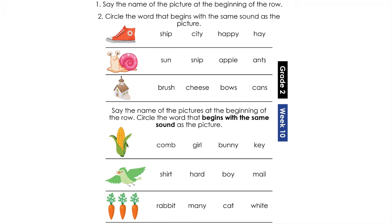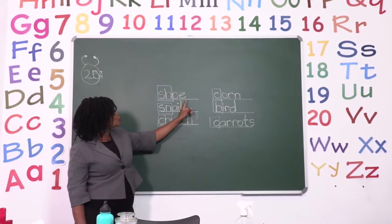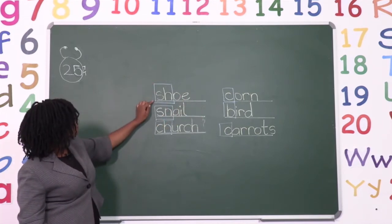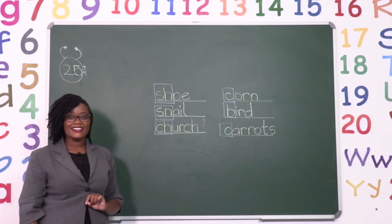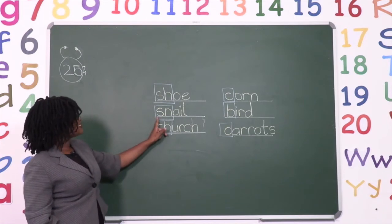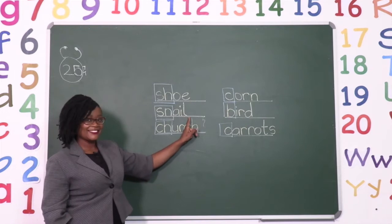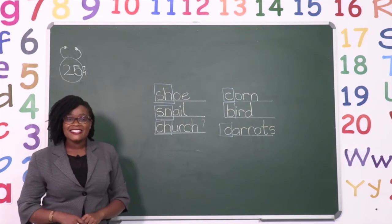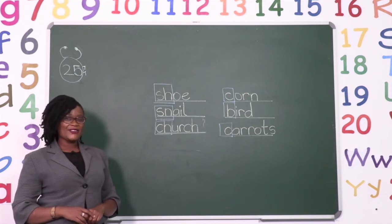Now I am going to show you what these words look like when we write them down. The first word is shoe. The beginning sound we can hear is 'sh'. Very good! Then the next one is a snail. The sound we can hear at the beginning is 'sn'. Very good!